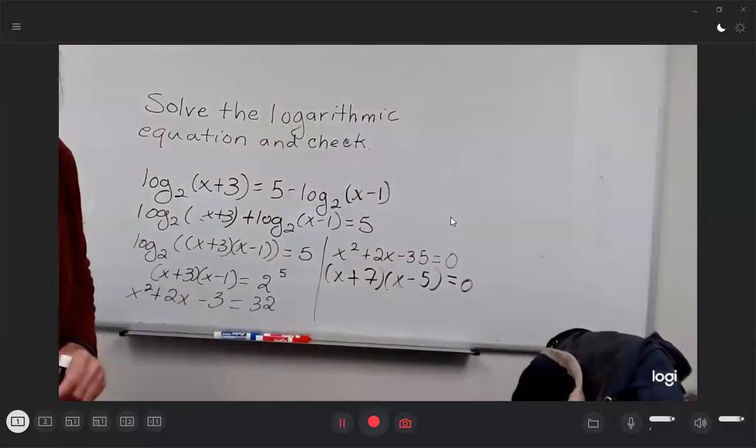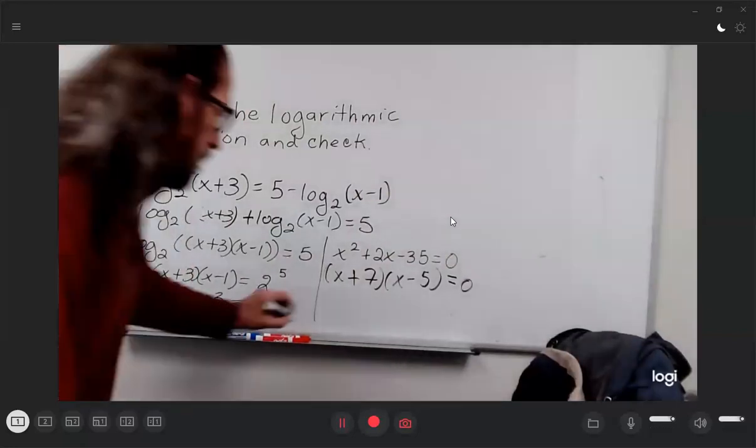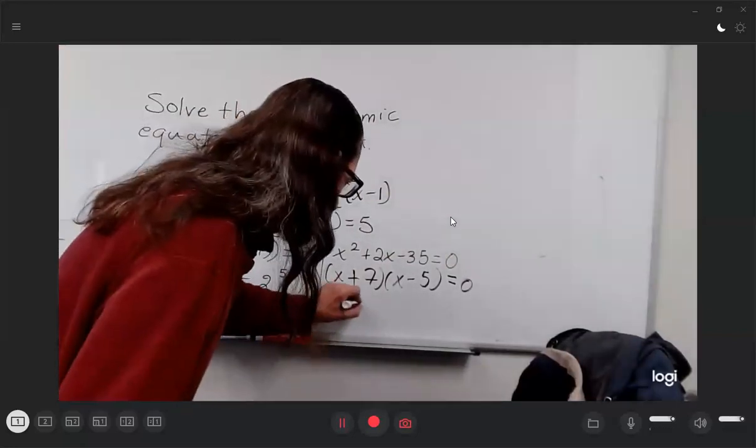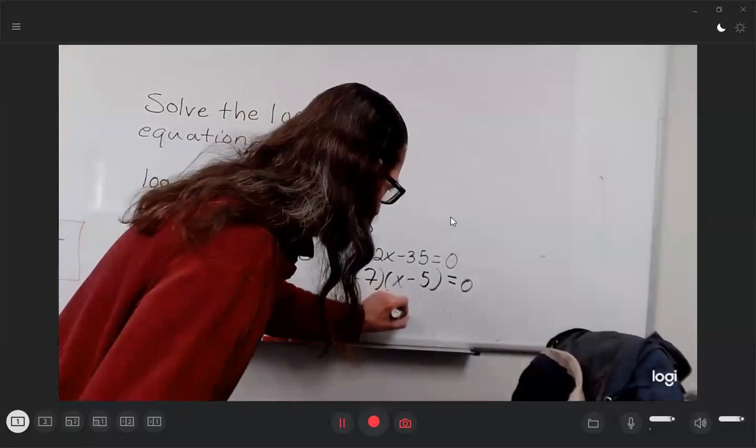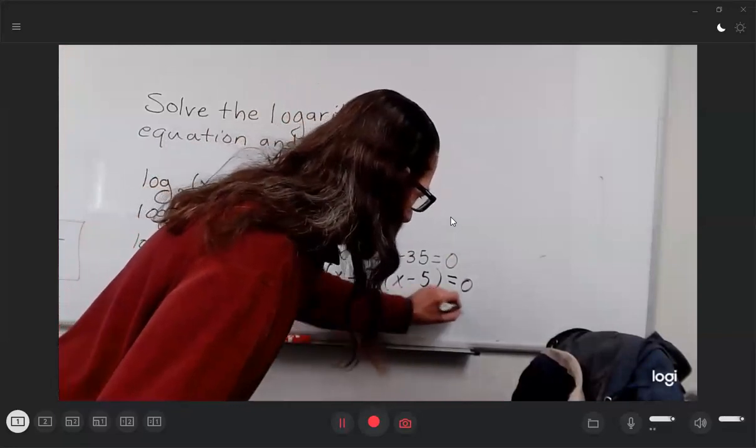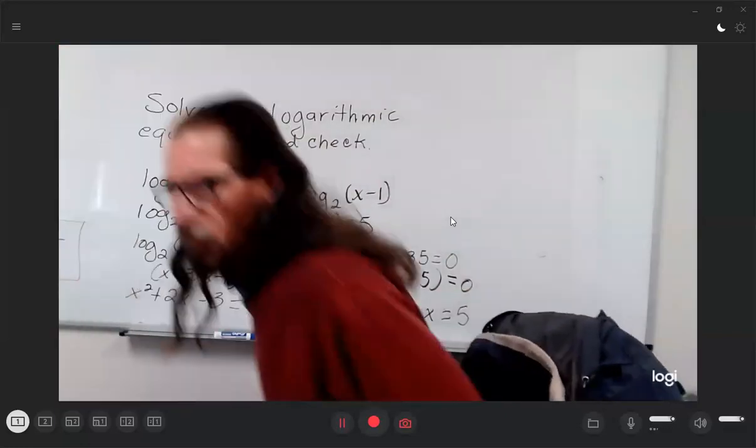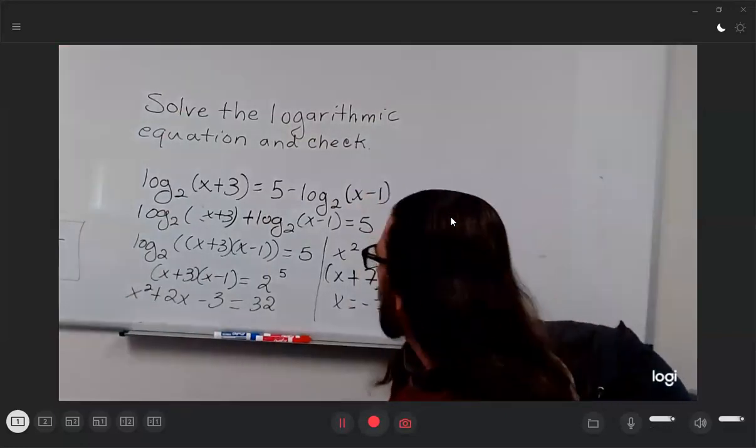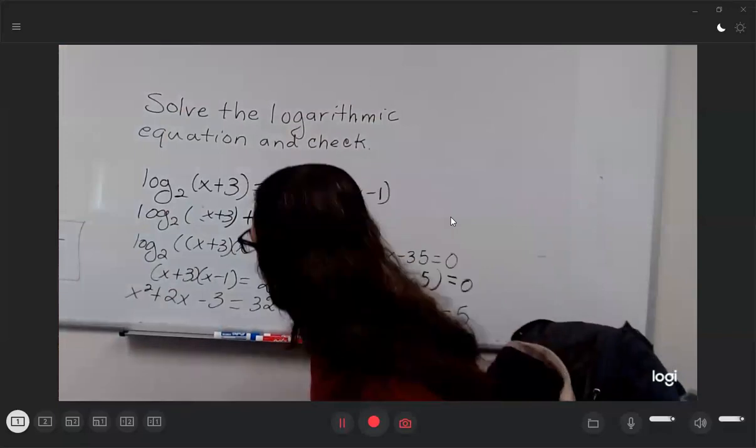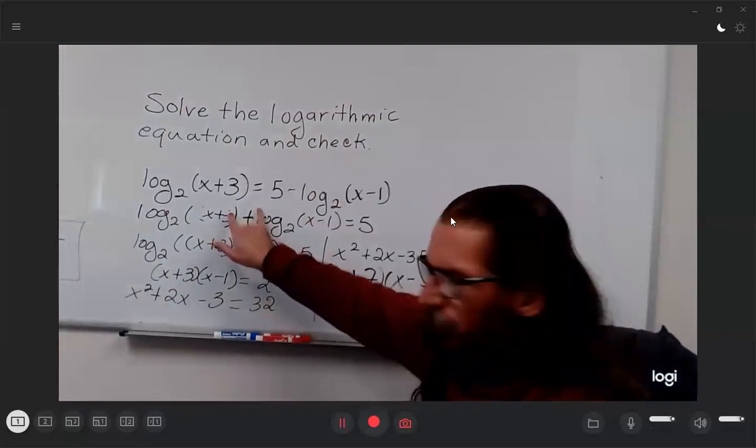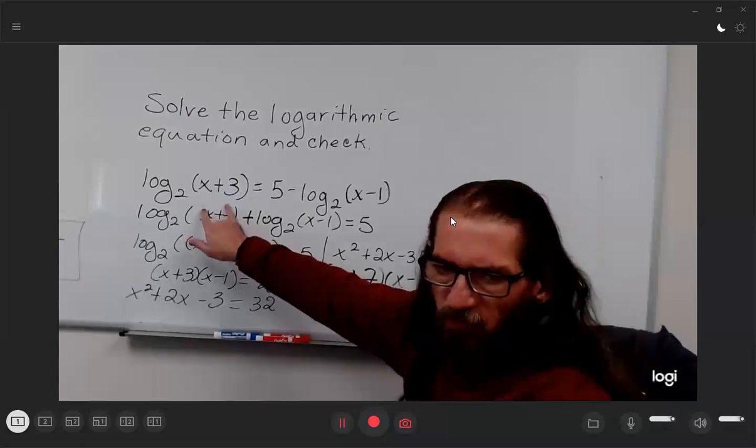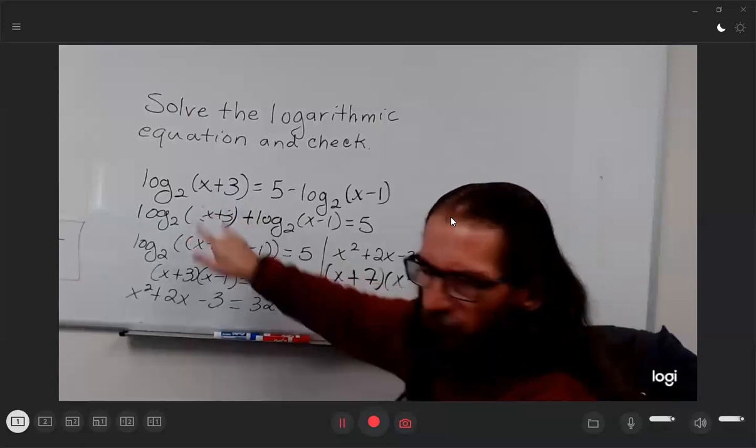That gives us two possible solutions: x = -7 or x = 5, after having set each factor equal to 0. But when we go back to the original equation, -7 + 3 is -4.